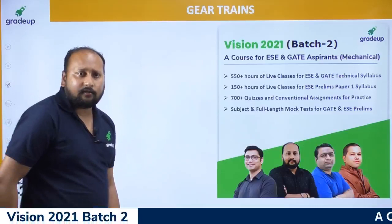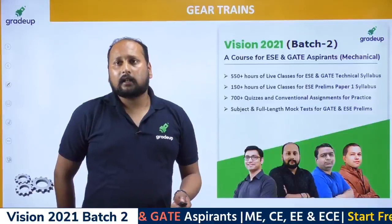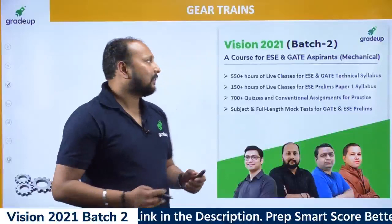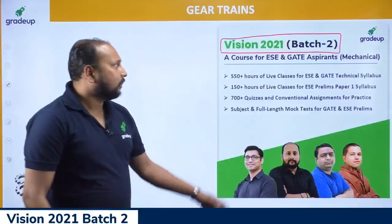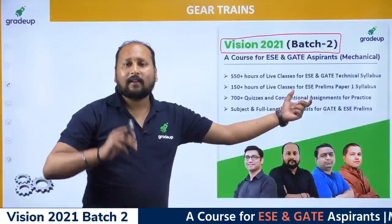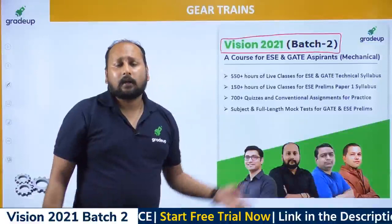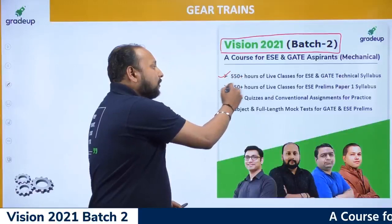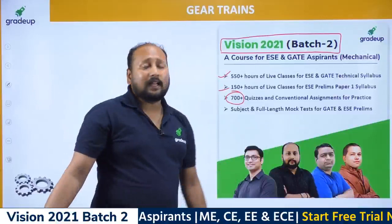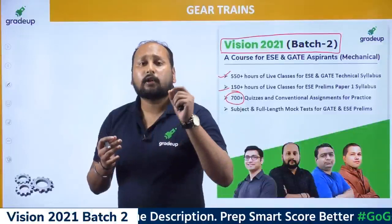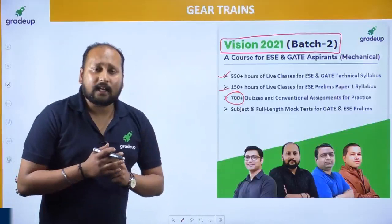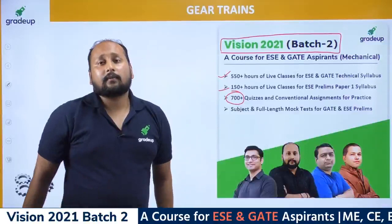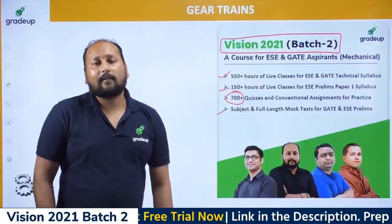This was a glimpse of gear trains for today's session. For the Vision 2021 batch, we'll have 550+ hours of live classes with interactive animations, 700+ quizzes at ESC and GATE level, daily five questions from every topic, and subject-related full and mock tests — a complete one-and-a-half year course for GATE and ESC 2021.